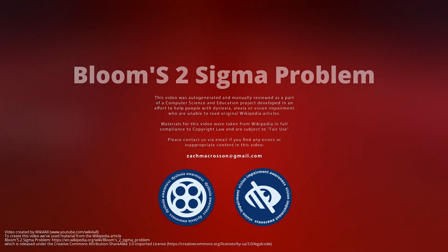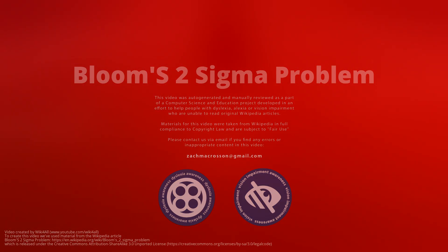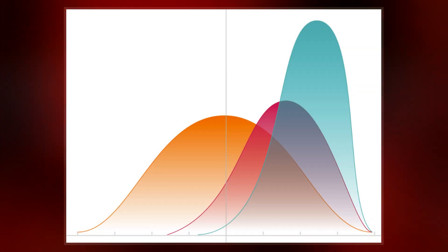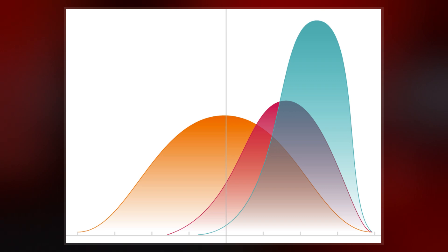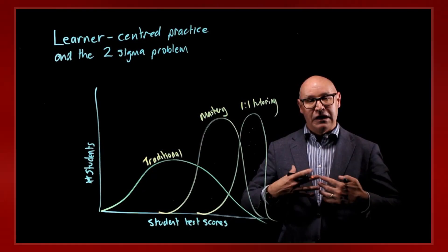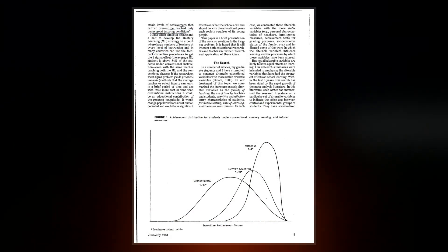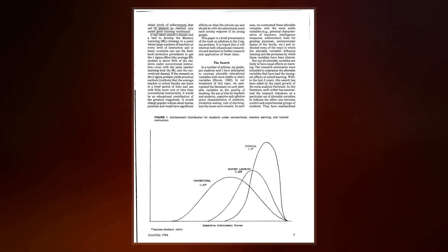Bloom's two-sigma problem refers to an educational phenomenon observed by educational psychologist Benjamin Bloom and initially reported in 1984 in the journal Educational Researcher. Bloom found that the average student tutored one-to-one using mastery learning techniques performed two standard deviations better than students who learn via conventional instructional methods.